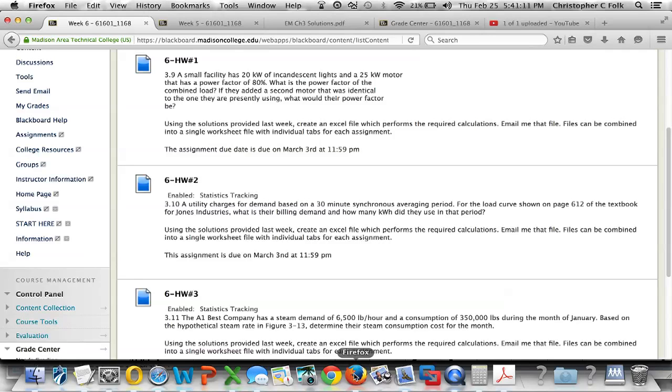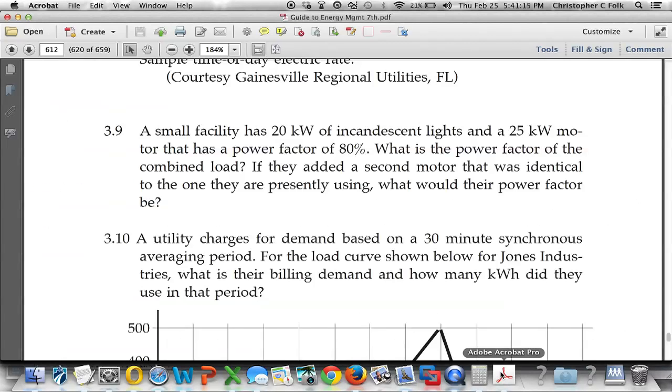For week six homework number one is to do problem 3-9. 3.9 is shown here on page 612 of the book. The small facility has a 20 kilowatt incandescent lights and it has a 25 kilowatt motor that has a power factor of 80 percent.